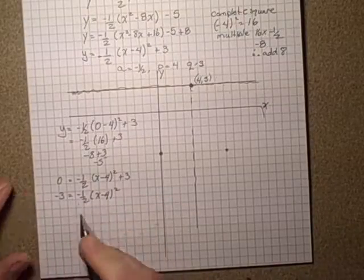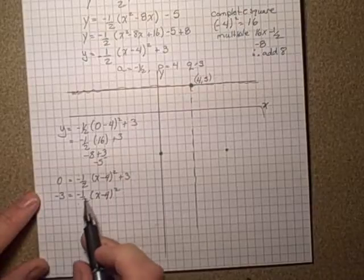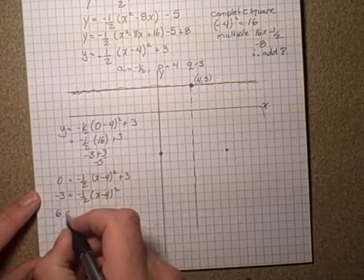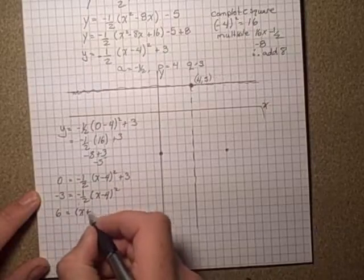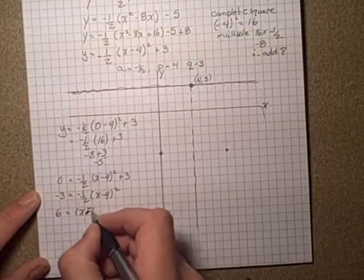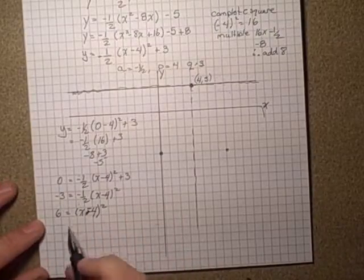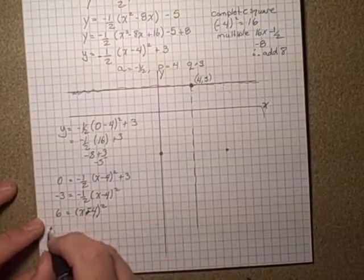Let's multiply both sides by negative two to cancel out the halves, so this would be six. Oops, I was going to put plus sign there. Minus four, x minus four all squared.